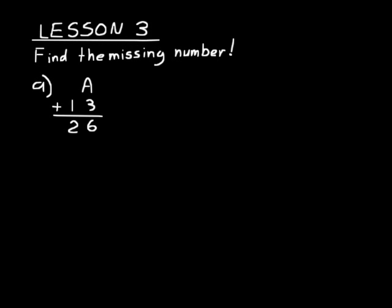Maybe you can do this problem in your head and know that 13 plus 13 equals 26 — that's one way to figure it out. But if you don't, you would have to think: if I subtracted 13 from 26, that would give me A. So let's do that. 26 minus 13: 6 minus 3 is 3, 2 minus 1 is 1. So A equals 13. That's our answer.